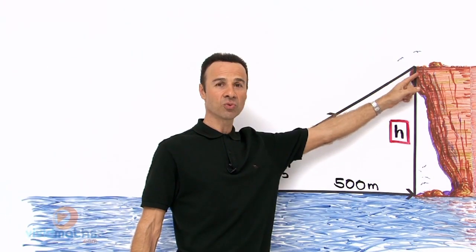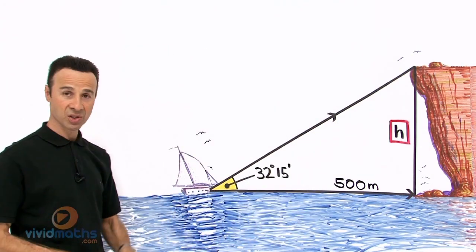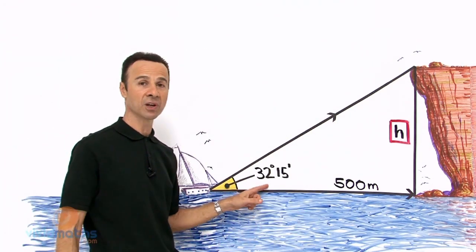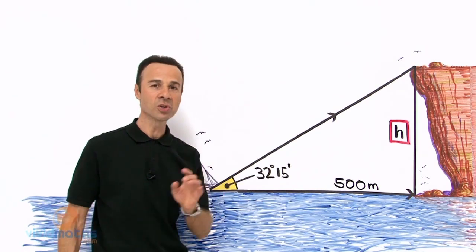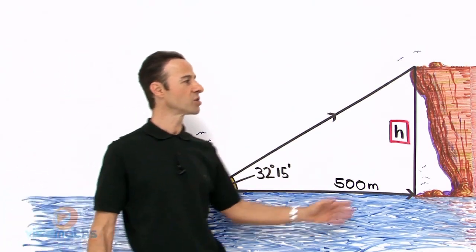So she is aiming right there, right on the edge, right on the apex of that cliff. So she measured 32 degrees 15 minutes. So the good news about trigonometry is this tool allows you to measure heights of objects, whether it be buildings, cliffs, hills, or mountains.